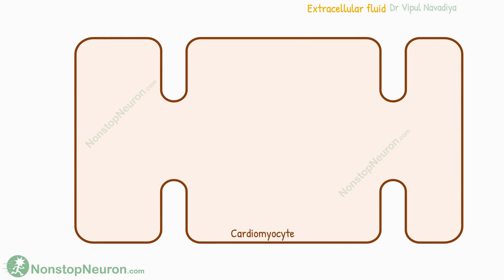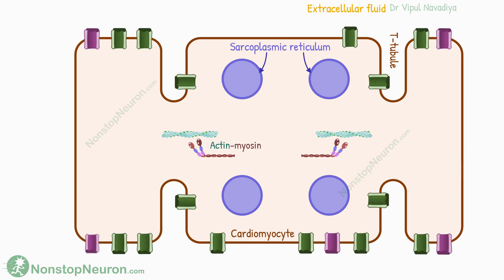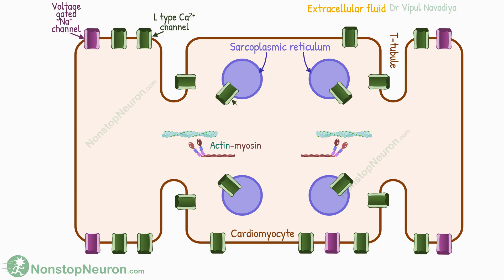This is a cardiomyocyte. The invaginations in its membrane are T-tubules. This is the sarcoplasmic reticulum. And these are contractile filaments, actin and myosin. All over the membrane, we have voltage-gated sodium channels and L-type calcium channels. And on the sarcoplasmic reticulum, there are ryanodine receptor channels, which are also called calcium-release channels. This is one cell.